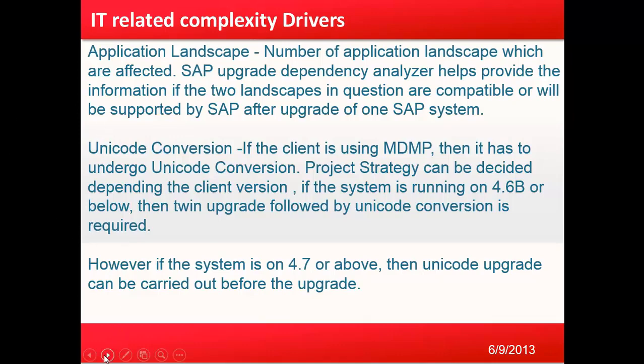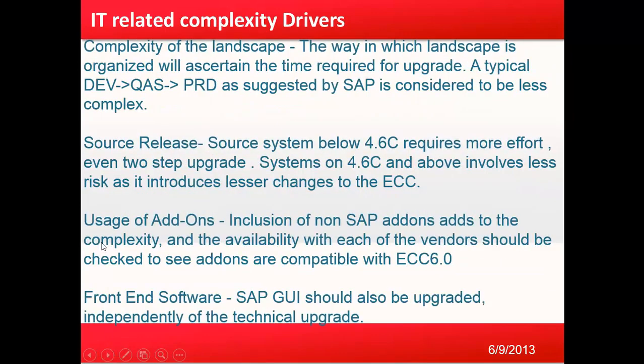The complexity of the landscape — the way in which the landscape is organized — will determine the time required for the upgrade. A typical SAP landscape of Dev to QA to Prod, as suggested by SAP, is considered less complex. Regarding source release, a source release below 4.6C requires more effort and even a two-step upgrade, while systems on 4.6C and above involve less risk as they introduce fewer changes to the ECC system.